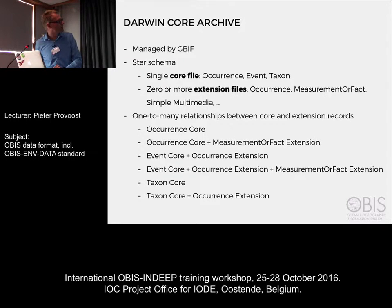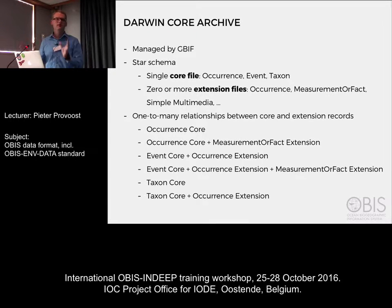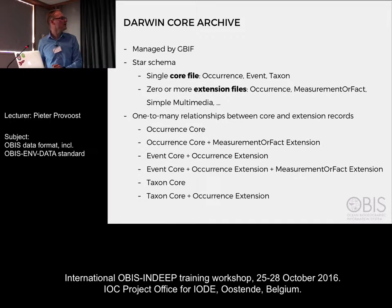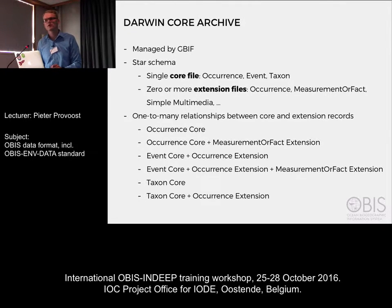Darwin Core archives use a so-called star schema. This means that you'll always have one core file and around that you can optionally have extension files. Core files can be about species occurrences, sampling events, or taxa. And there are many kinds of extension files, but the most used extensions are about occurrences or measurements.